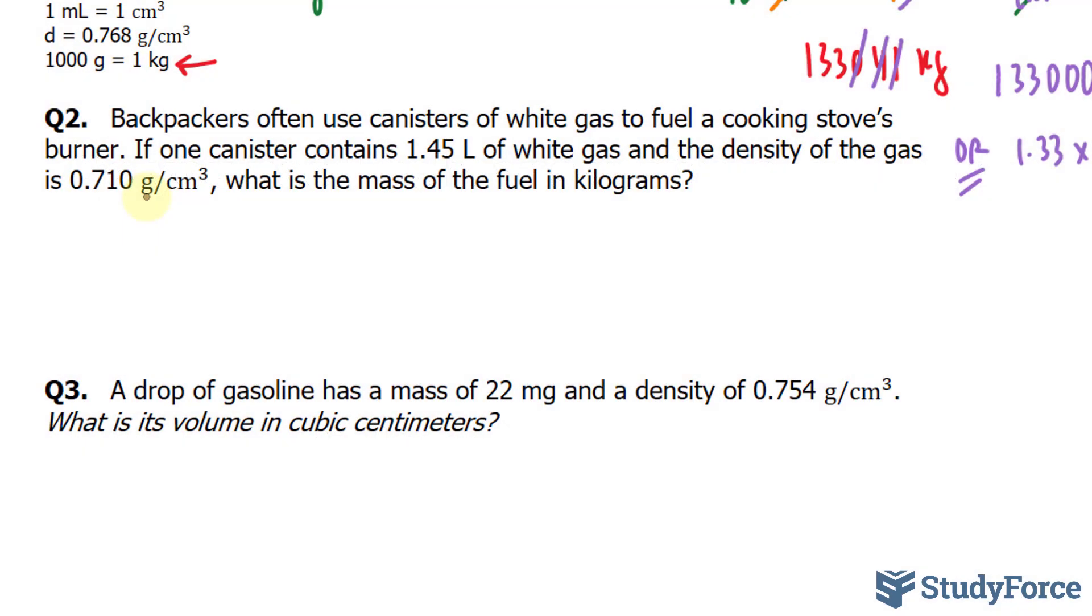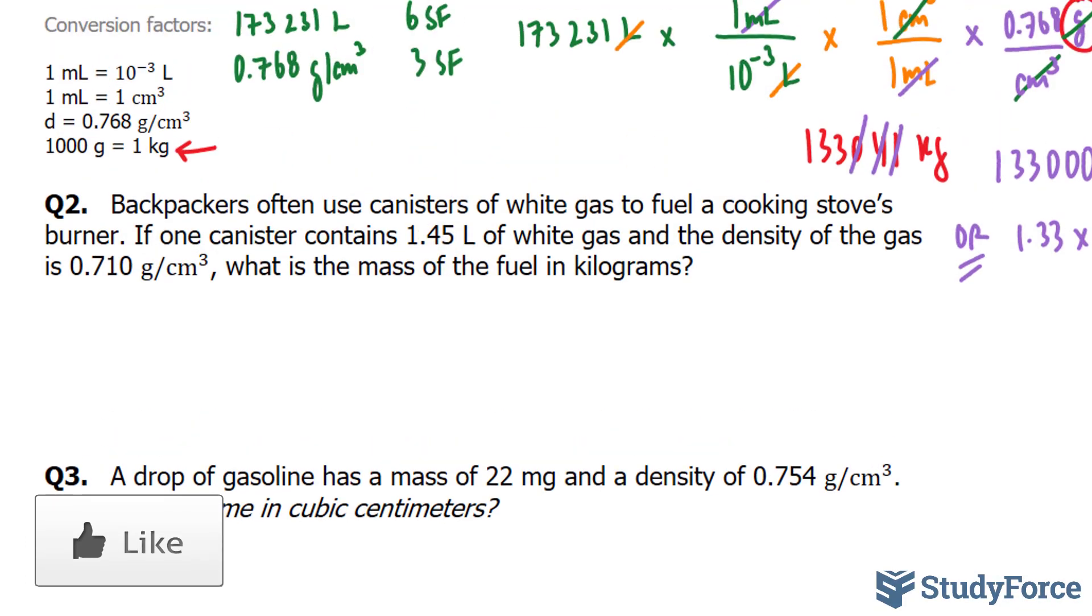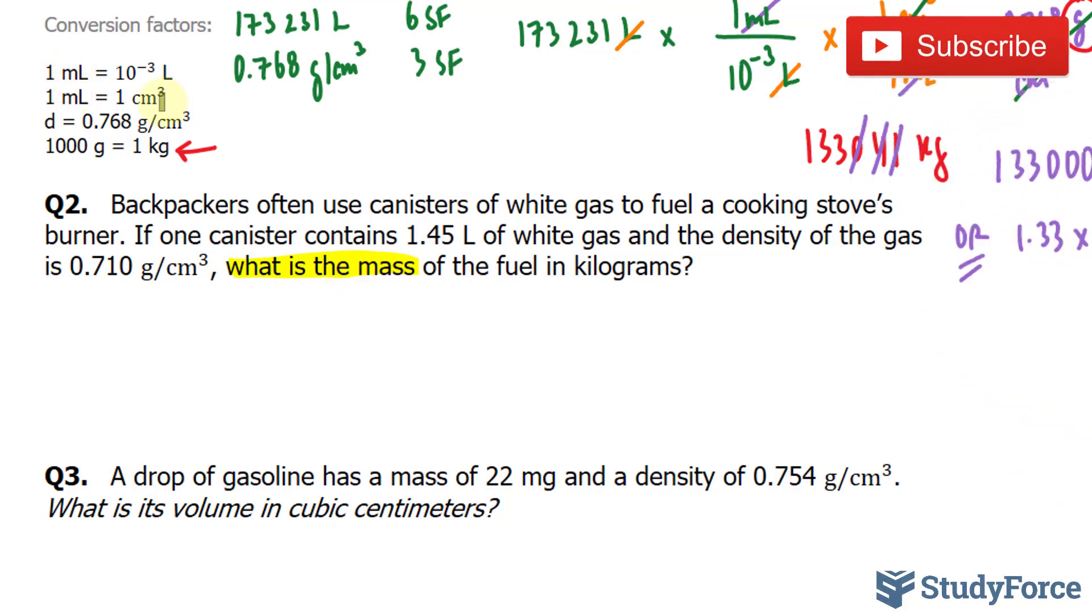The first thing that I want to do is convert 1.45 liters into milliliters. The reason why I'm doing that is because we want our final answer to be a mass in kilograms. So by converting to milliliters, I can then convert to centimeters cubed, and then use the properties of the density, which is grams per centimeters cubed, and find the mass in grams. And then from there, I can find the kilograms. Here's what I mean.